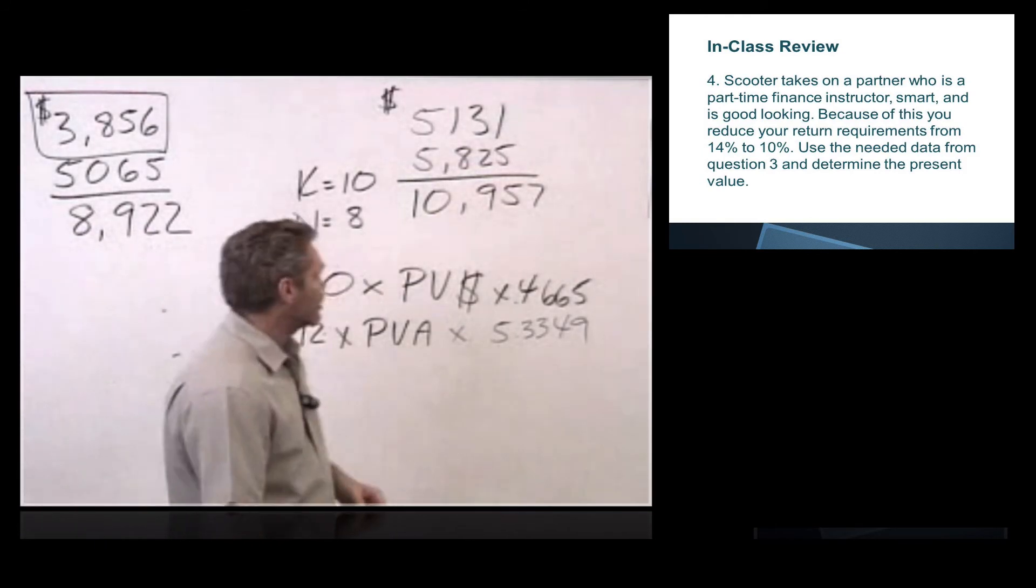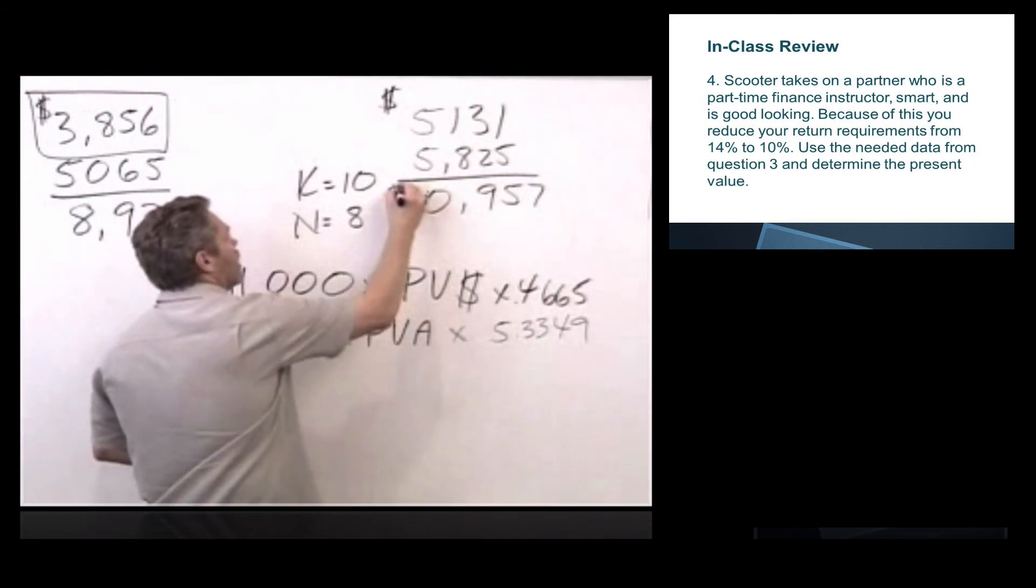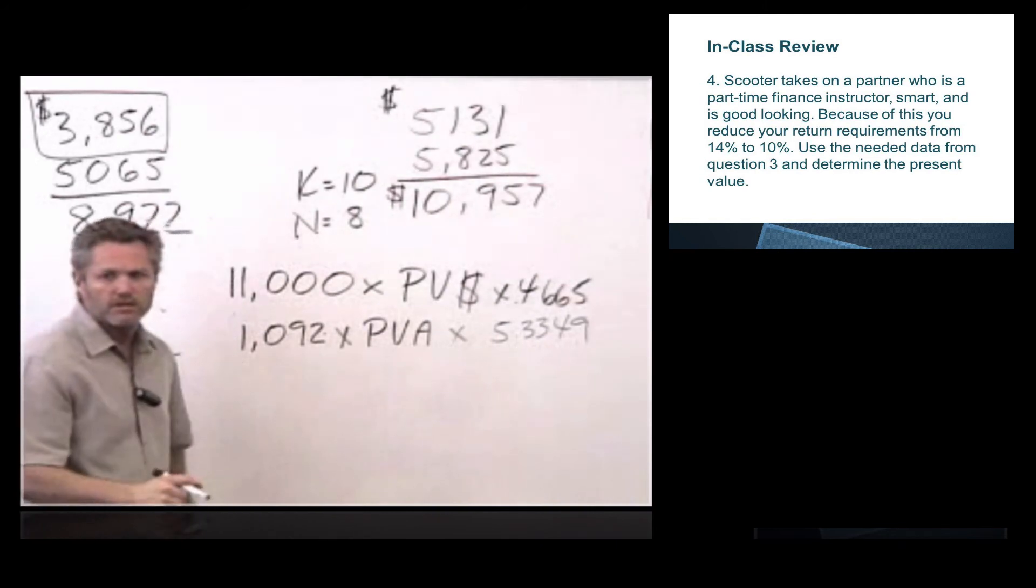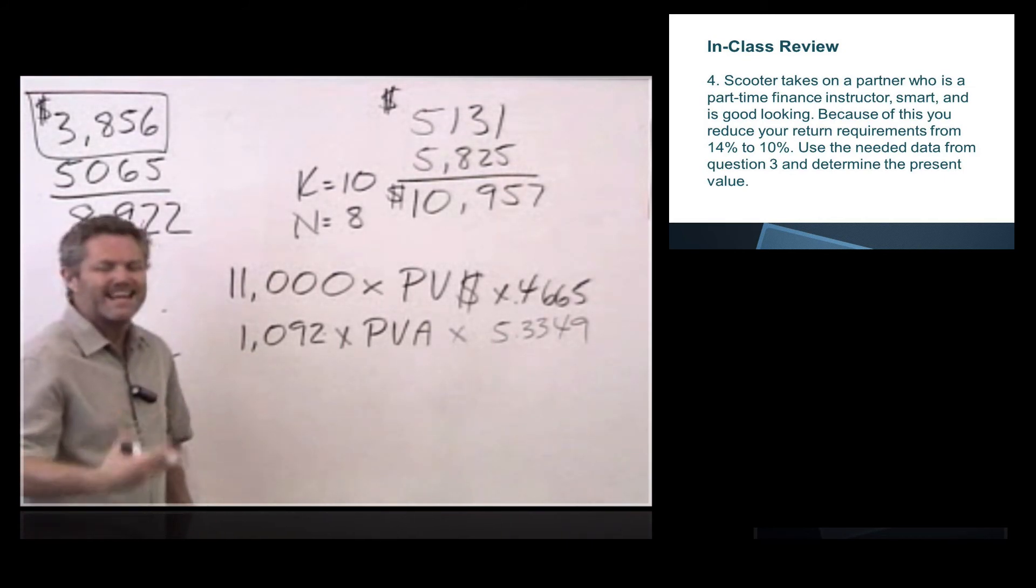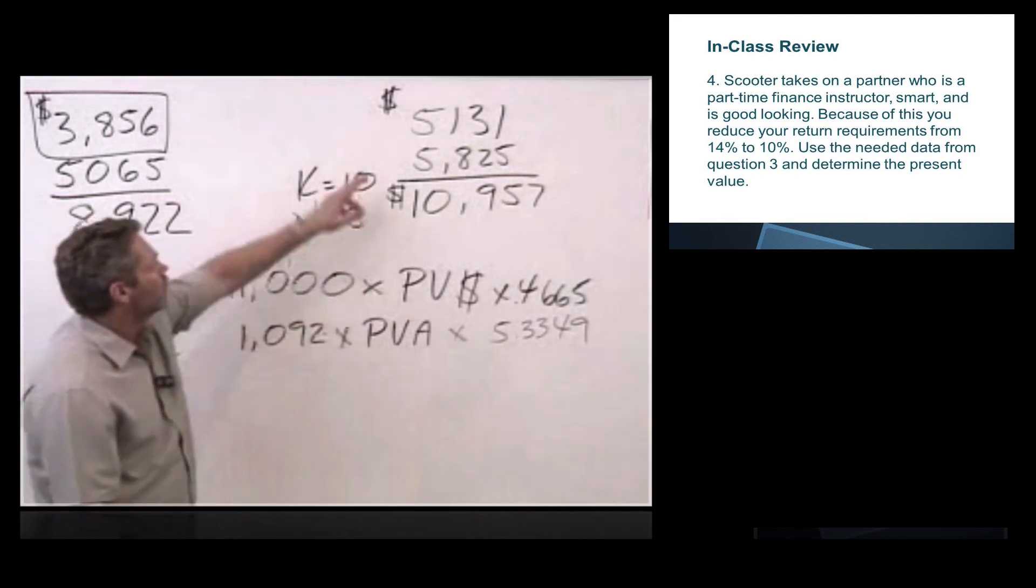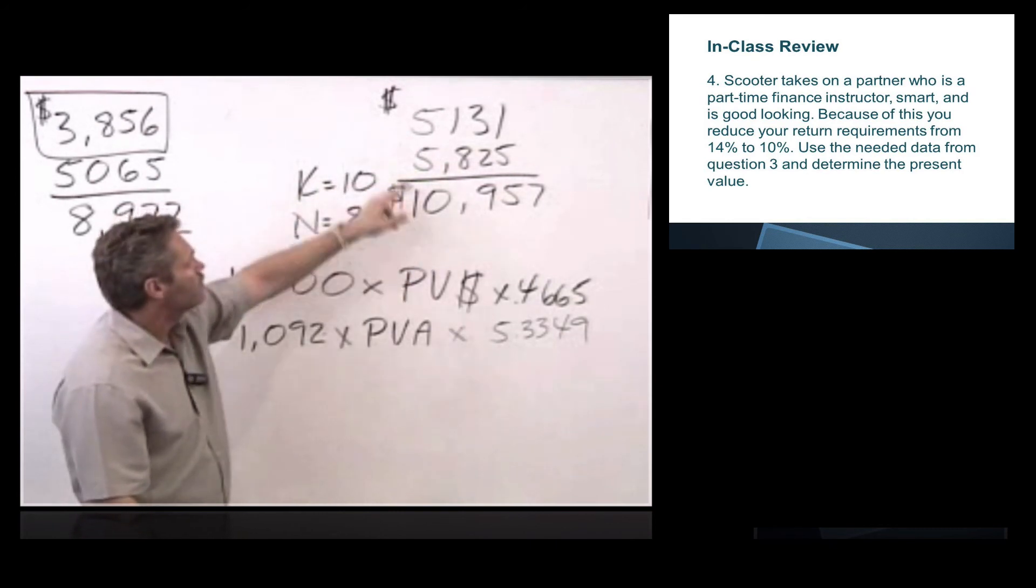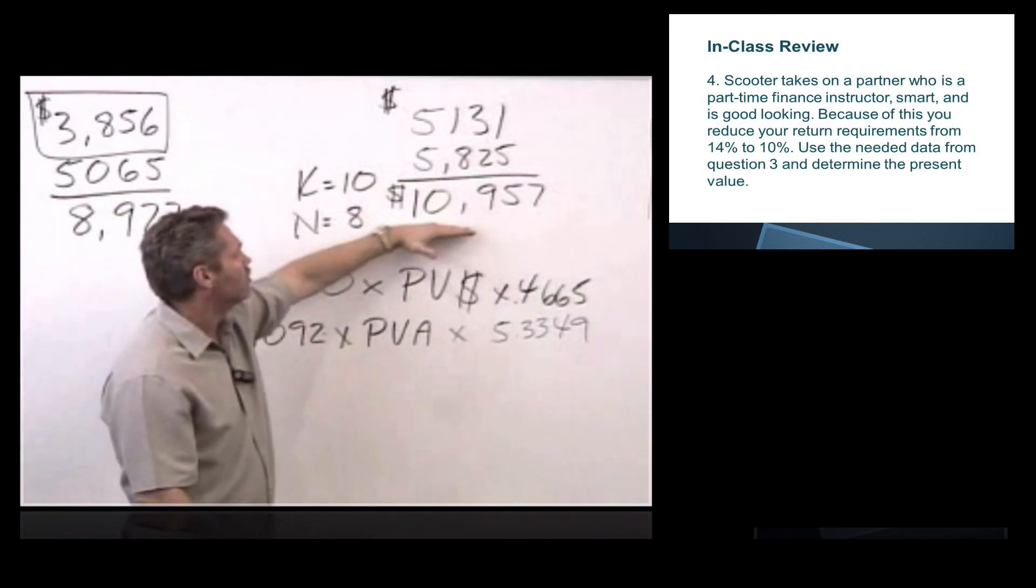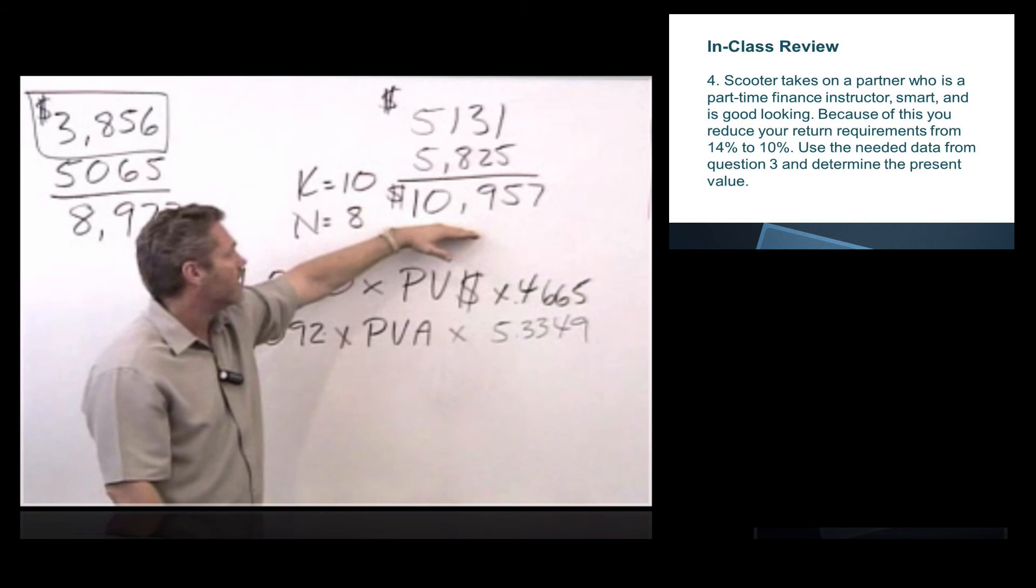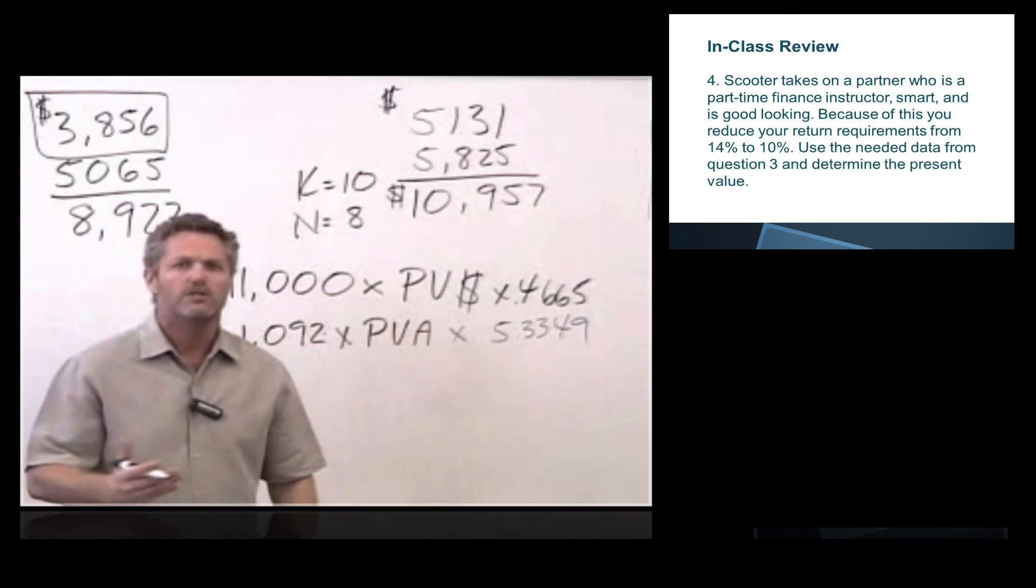So the question then comes, are we going to go ahead and do this deal now? Now that it's safer and a better investment, we're getting a bunch of pies. The answer is still no. And the reason it's no is I'm not going to give $15,000 today for $11,000 in the future that's going to be worth 5,131, and then a bunch of pies that are worth $5,825. Because I still have a value of only 10,957. If I do this deal, I am going to financially lose about $4,000.